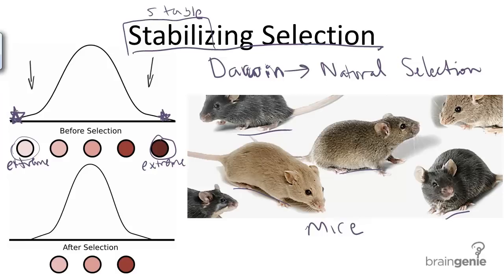This is the most common form of natural selection. The mouse population with the gray coats, or with the brown, tan, any sort of intermediary color, will most likely be the mice to survive. And therefore, these traits are going to be more pronounced in the population.